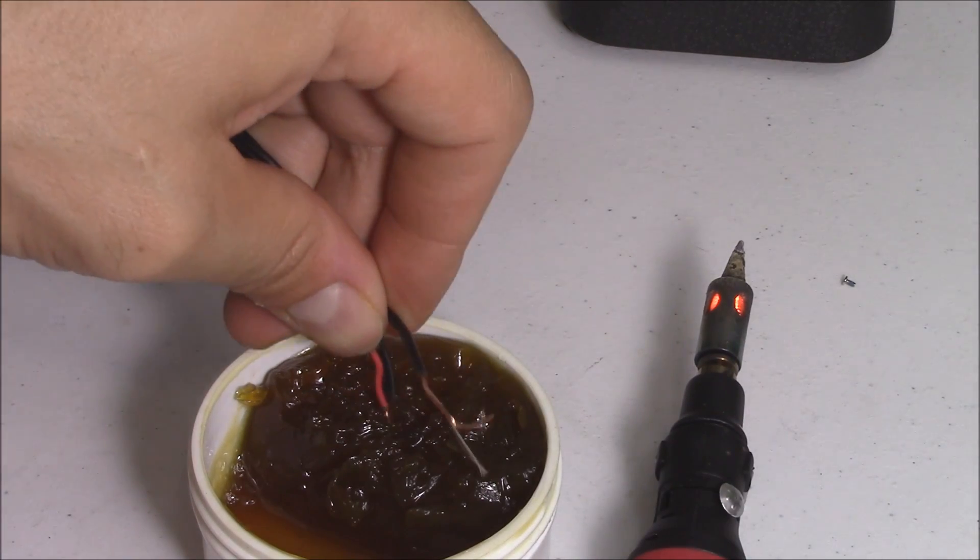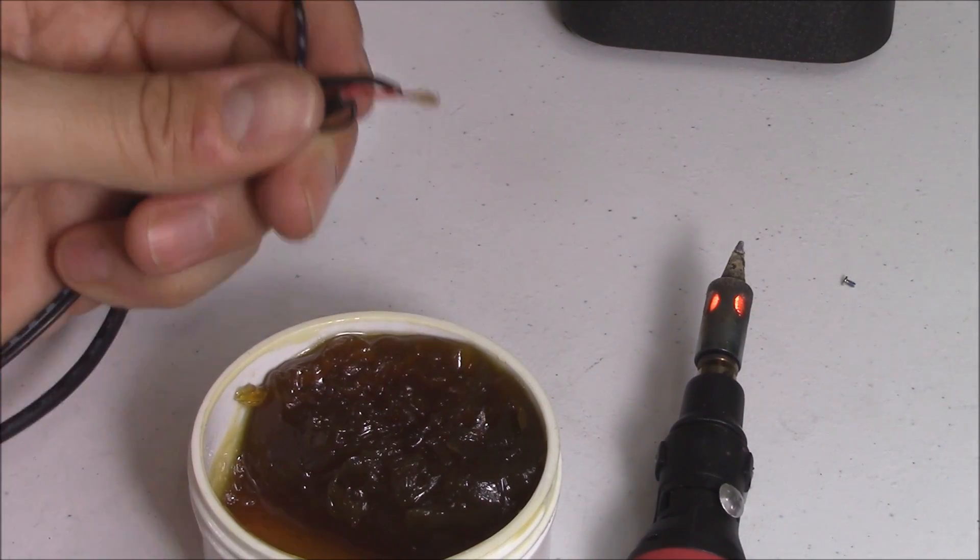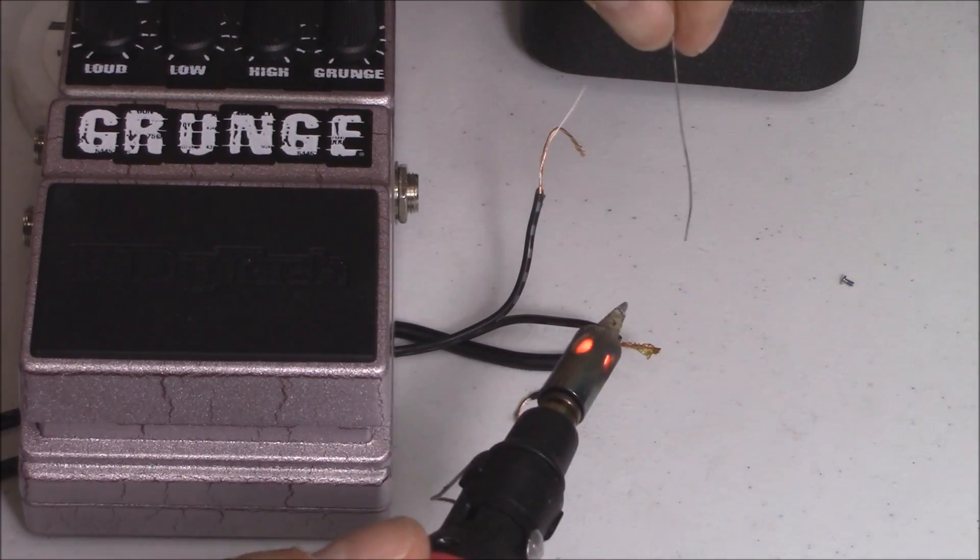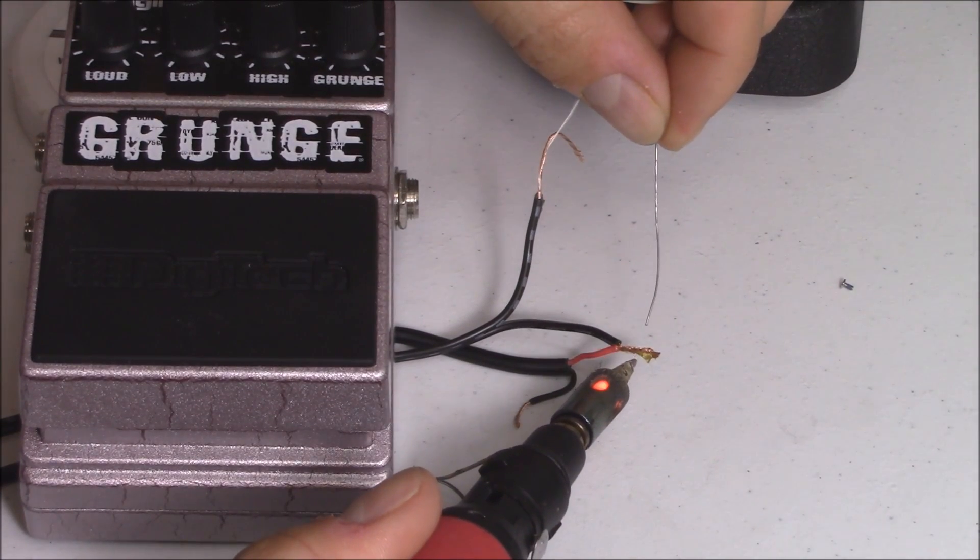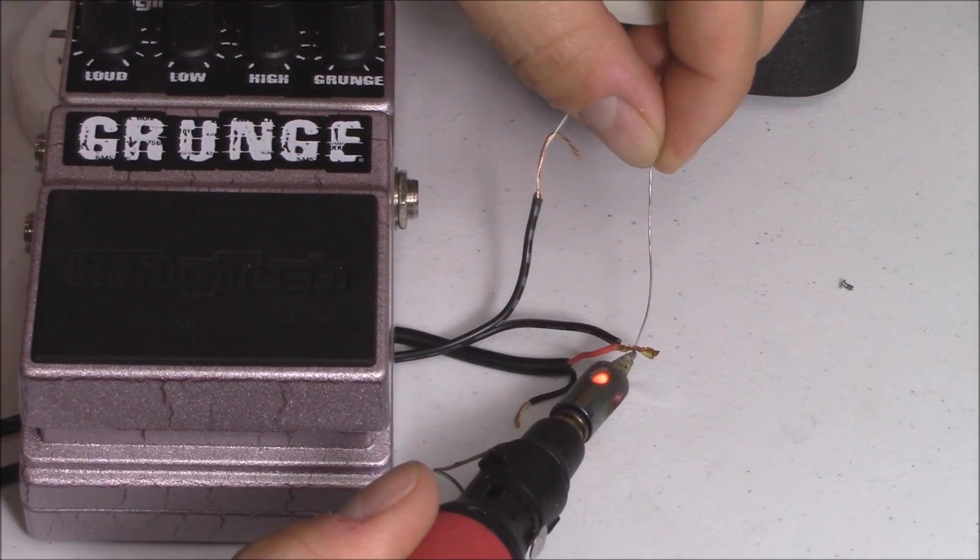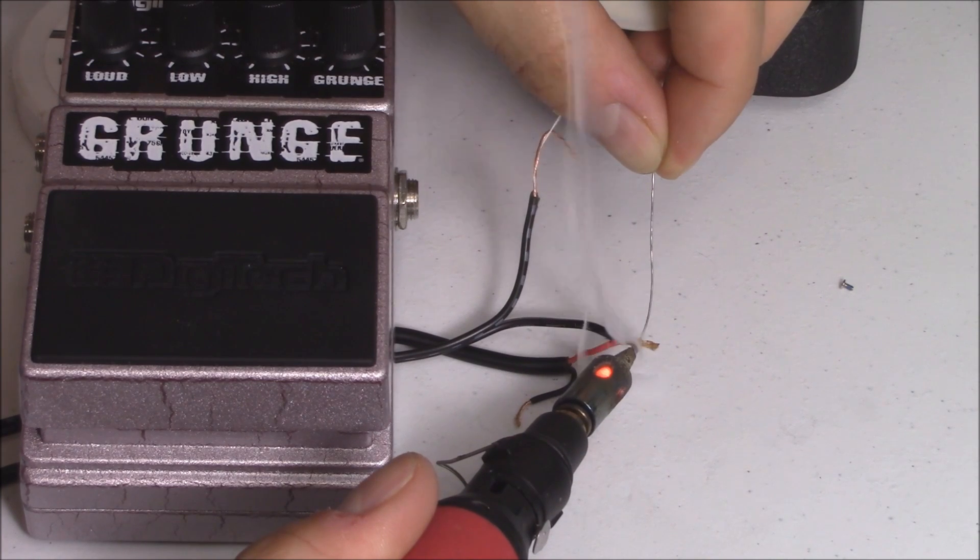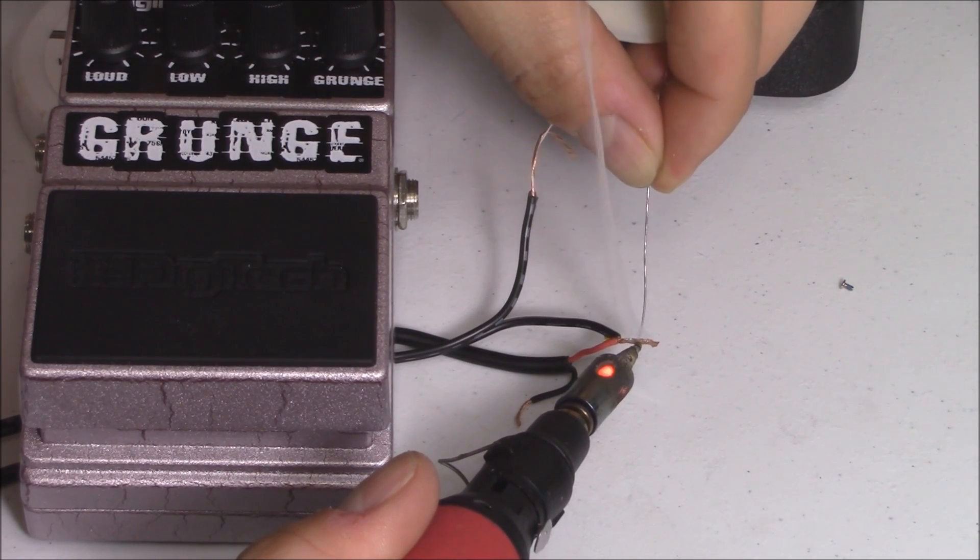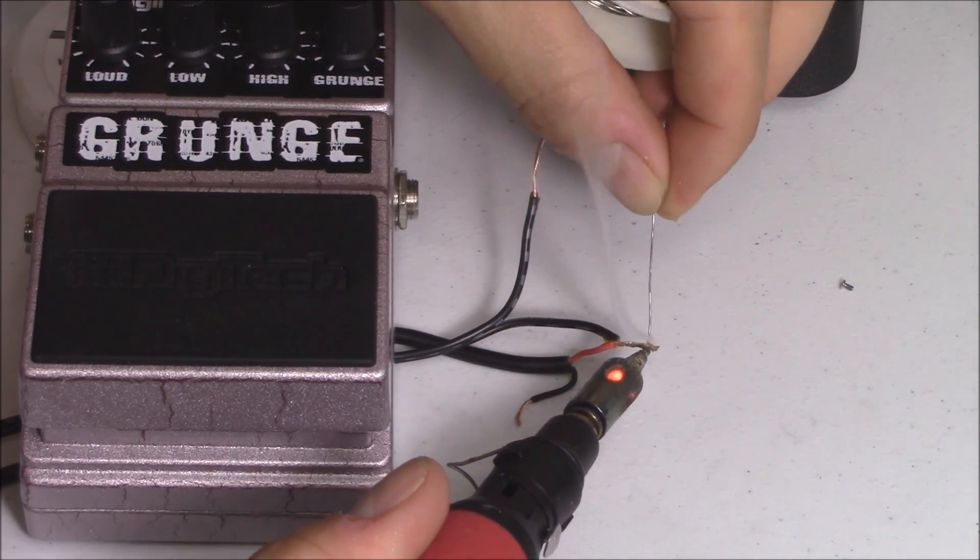And let's go ahead and dip it in the flux. That's going to help it solder. Now that I held it down, I'm going to go ahead and put some solder where the flux is. Let it soak in. Let it heat up. And it should soak right in. You don't want to breathe that junk in. It's not really healthy.